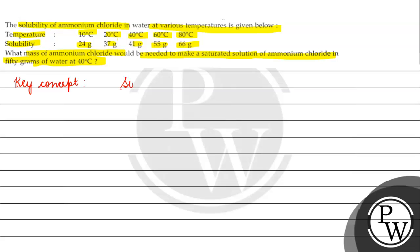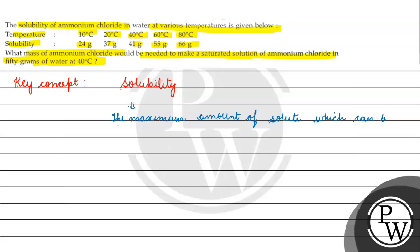The key concept for this question is solubility. Solubility is basically the maximum amount of solute which can be dissolved in 100 grams of solvent at a specified temperature. At any specified temperature, the maximum amount of solute that can be dissolved in 100 grams of solvent is called solubility.